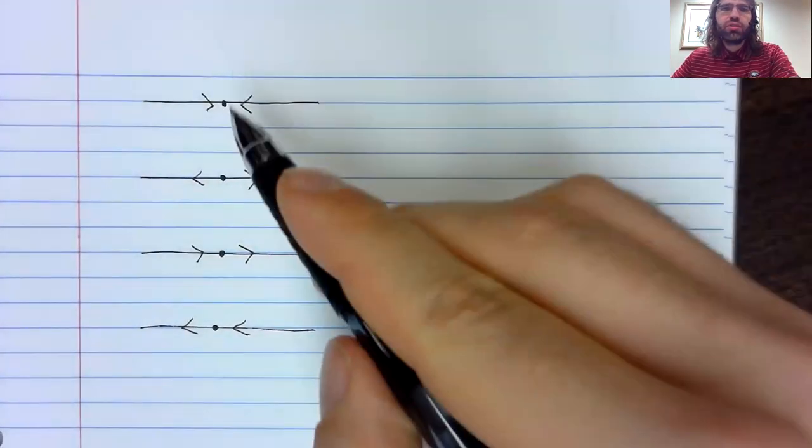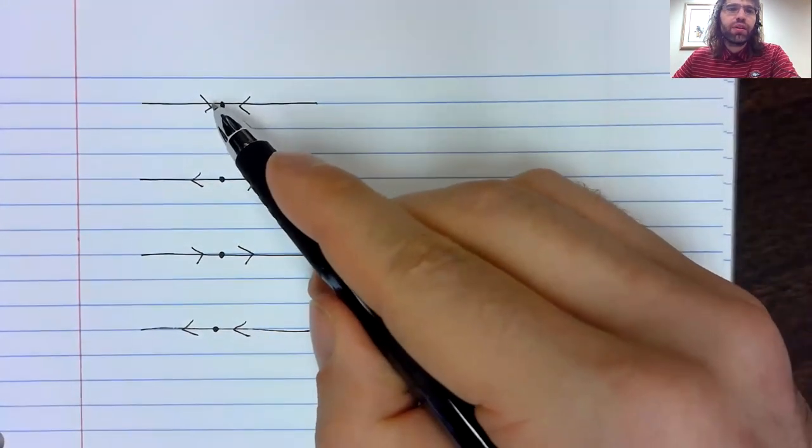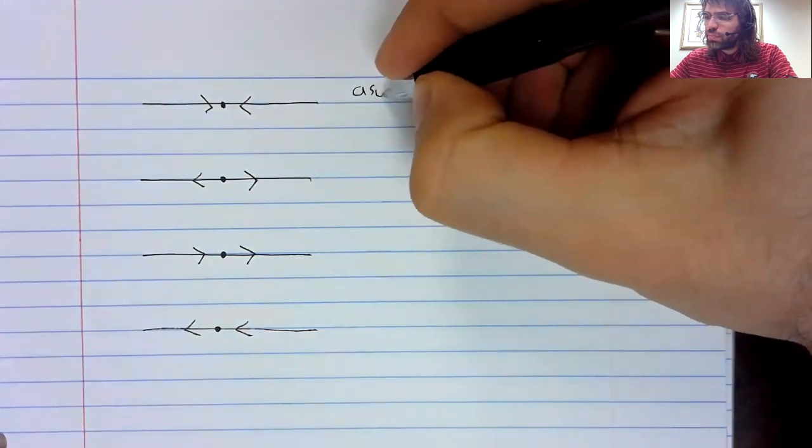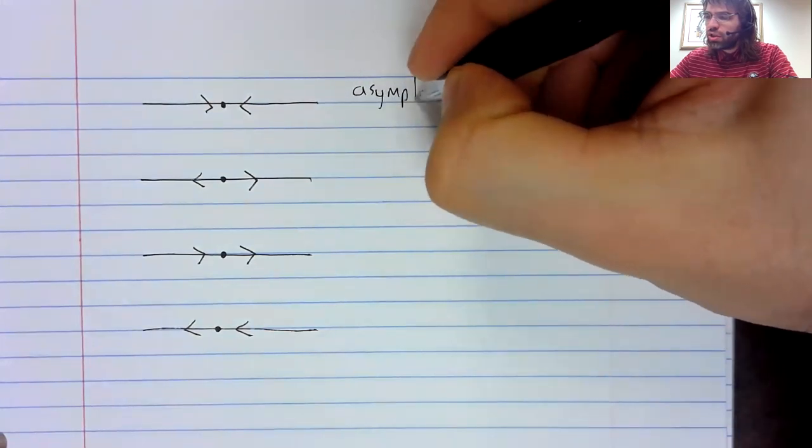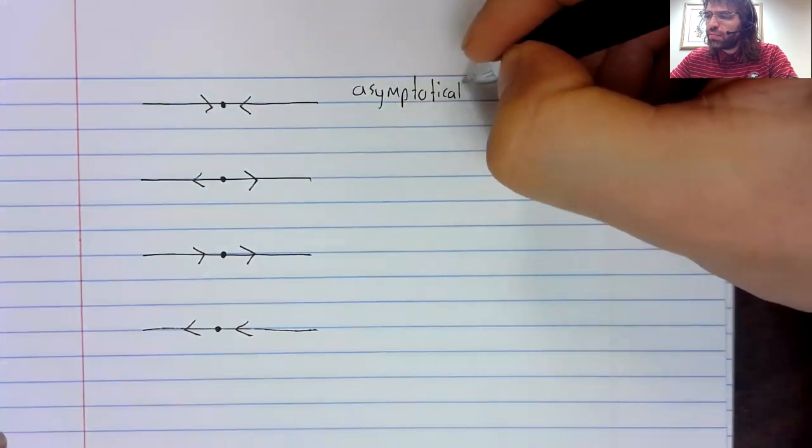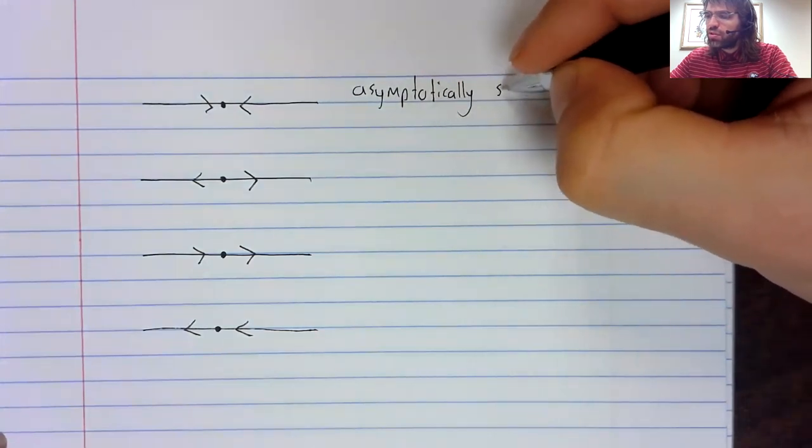If a fixed point looks like this, if the derivative is positive to the left of it, then negative to the right of it, it's called asymptotically stable.